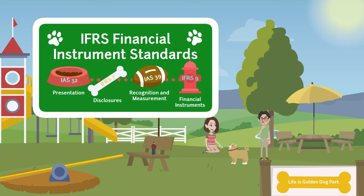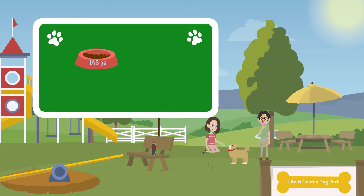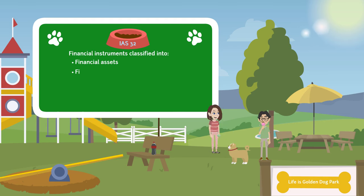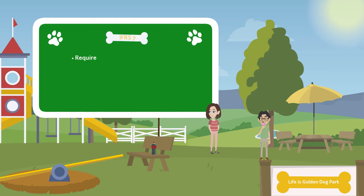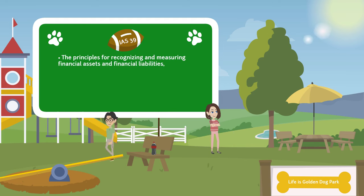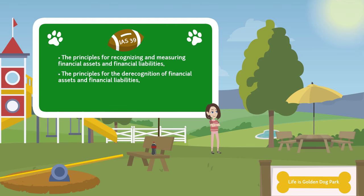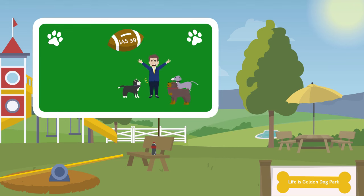IAS 32 specifies presentation for financial instruments. For presentation, financial instruments are classified into financial assets, financial liabilities, and equity instruments. IFRS 7 stipulates the required disclosures in financial statements for financial instruments. IAS 39 preceded IFRS 9 and established the principles for recognizing and measuring financial assets and financial liabilities, the principles for the derecognition of financial assets and financial liabilities, as well as the principles for hedge accounting.